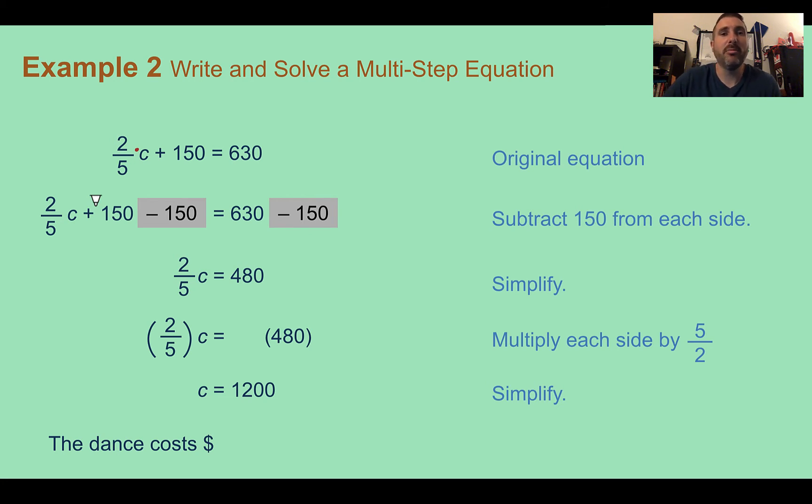Now, to undo my fraction, I'm going to multiply each side by its inverse, or its reciprocal. So here, instead of two-fifths, I would multiply by 5 over 2. Again, doing this allows me to get the same value in the numerator and the denominator, which essentially gives me a value of 1. So multiply both sides by 5 halves, and 5 halves, or 5 over 2 times 480, gives us a total of 1,200. So the dance is going to cost $1,200.